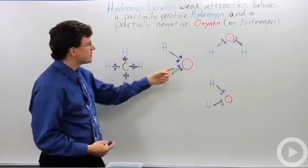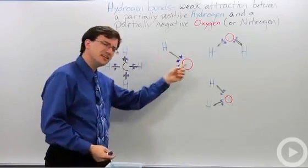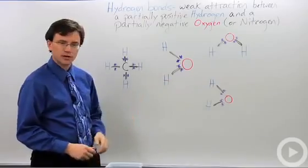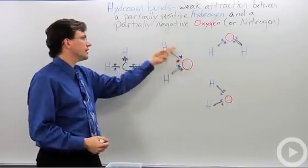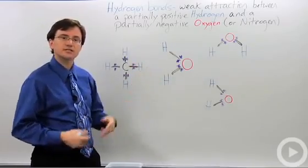So what that means is that these negative electrons tend to spend a little bit more time around the oxygen than around the hydrogen. That makes this oxygen slightly negative. If it's slightly negative that means this hydrogen here is slightly positive.